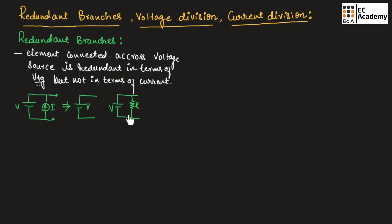In the same way, if we consider this second example, the resistor is connected in parallel with this voltage source. That's why this resistor will be a redundant branch and we can neglect this resistor.